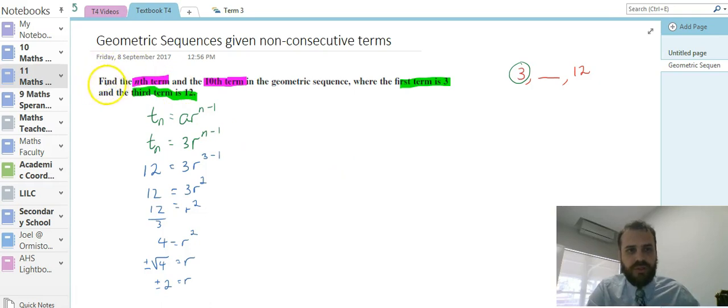So my formula for the nth term is, this is the first part here, part a. So really, it's tn equals that first value, which is 3, times 2 to the power of n minus 1, or tn equals 3 times negative 2 to the power of n minus 1.